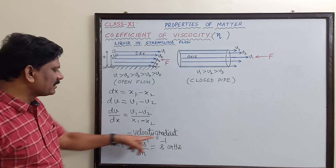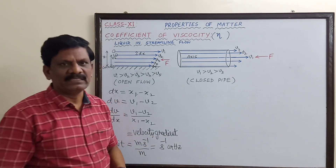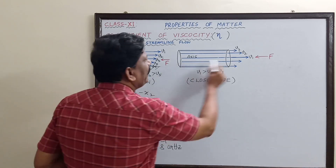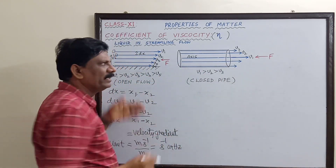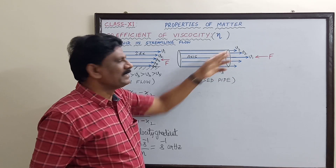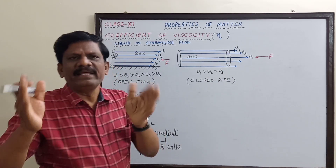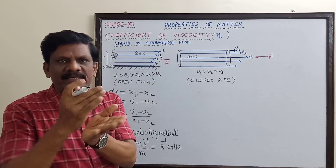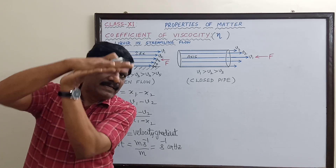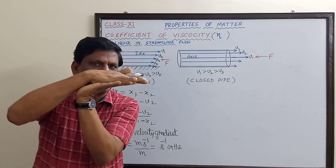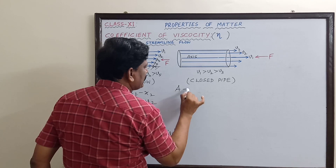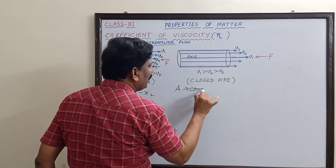So dv/dx is called the velocity gradient. Now, whenever these layers are flowing in one direction, there is some common area of contact between any two layers when one layer flows over the other.